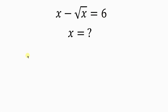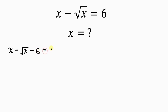Our first step is to move 6 to the left-hand side. So we have x minus the square root of x minus 6, and this is equal to 0.